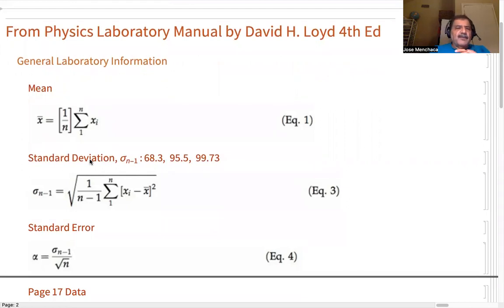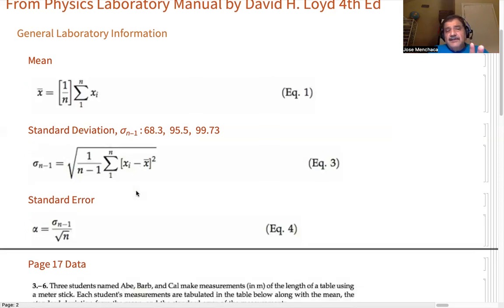But then we get to the standard deviation. And to get the standard deviation, the sigma n minus one, that's equal to the square root of one divided by n minus one. In other words, whatever we're going to sum, we're going to divide it by three, in this case, if our n is four. And what you do is you subtract the mean from x1 and square it. Then you subtract the mean from x2 and square it and so forth with x3 and x4. And then, so that gives you the standard deviation.